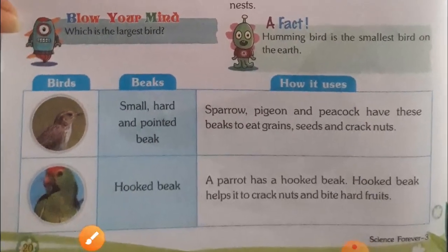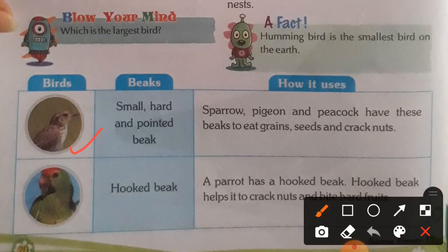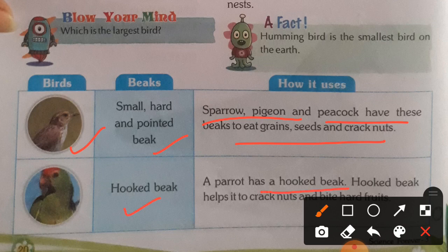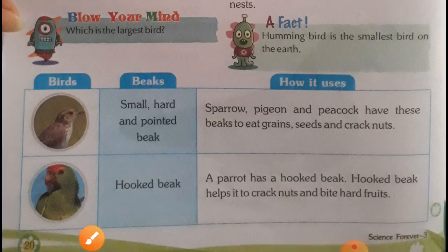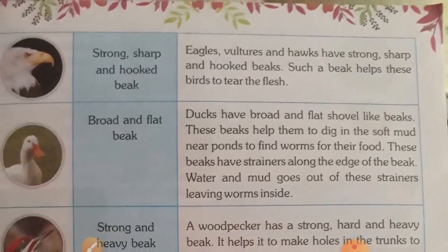Here you can see different types of beaks. Birds with small, heart-shaped pointed beaks — like sparrow, pigeon, and peacock — eat grain, seeds, and crack nuts. A parrot has a hooked beak, which helps it crack nuts and bite hard fruits. Eagles, vultures, and hawks have a strong, sharp, and hooked beak, which helps these birds to tear flesh.